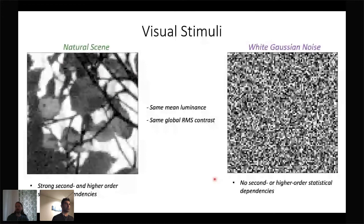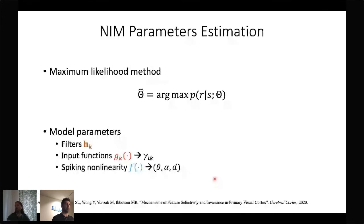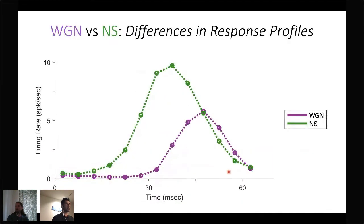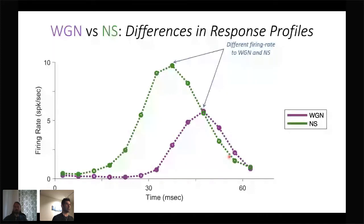We characterized the receptive field of each neuron by estimating the model parameters using maximum likelihood estimation on all model parameters simultaneously via joint optimization. This is an example of how a V1 cell responded to these stimulus types, showing the post-stimulus time histogram of responses to natural scenes in green and to white Gaussian noise in magenta. This cell responds with a higher firing rate and shorter latency to natural scenes than to white Gaussian noise.